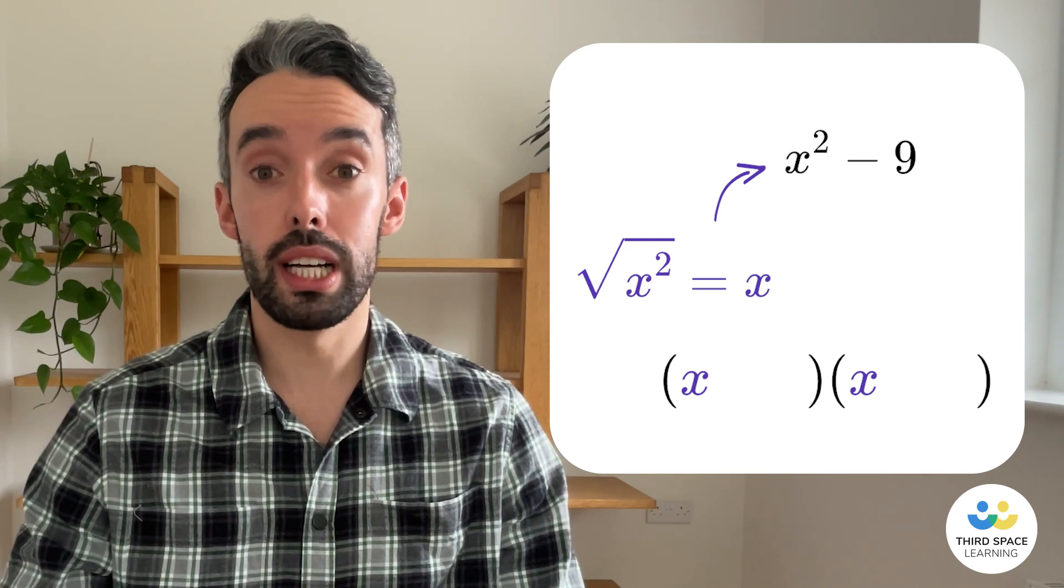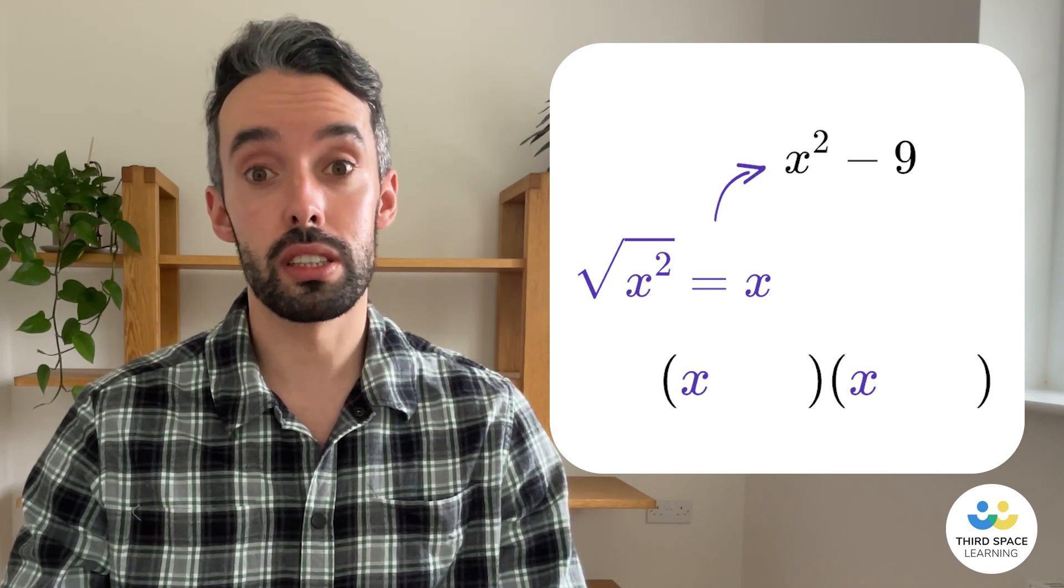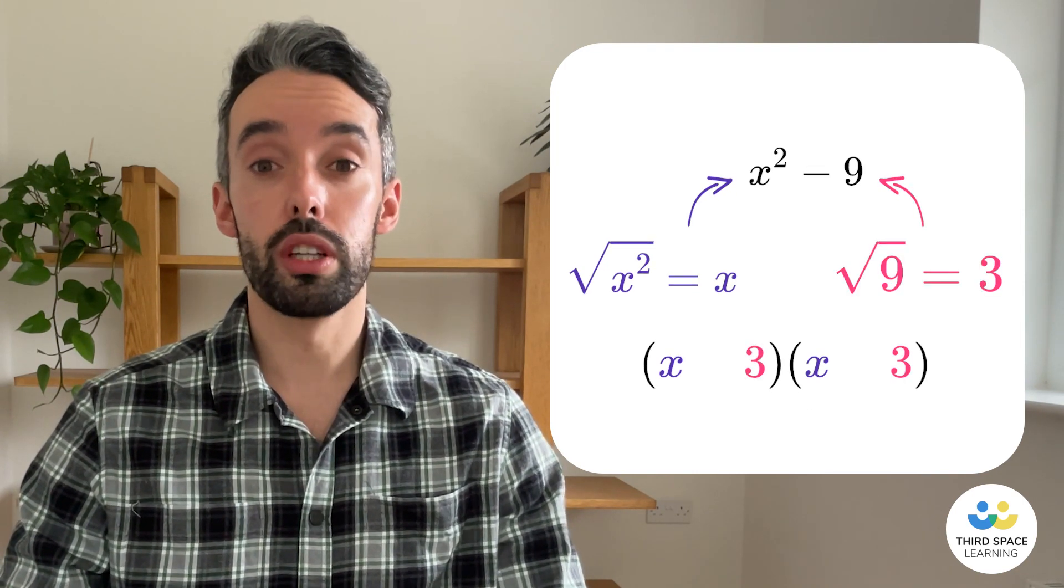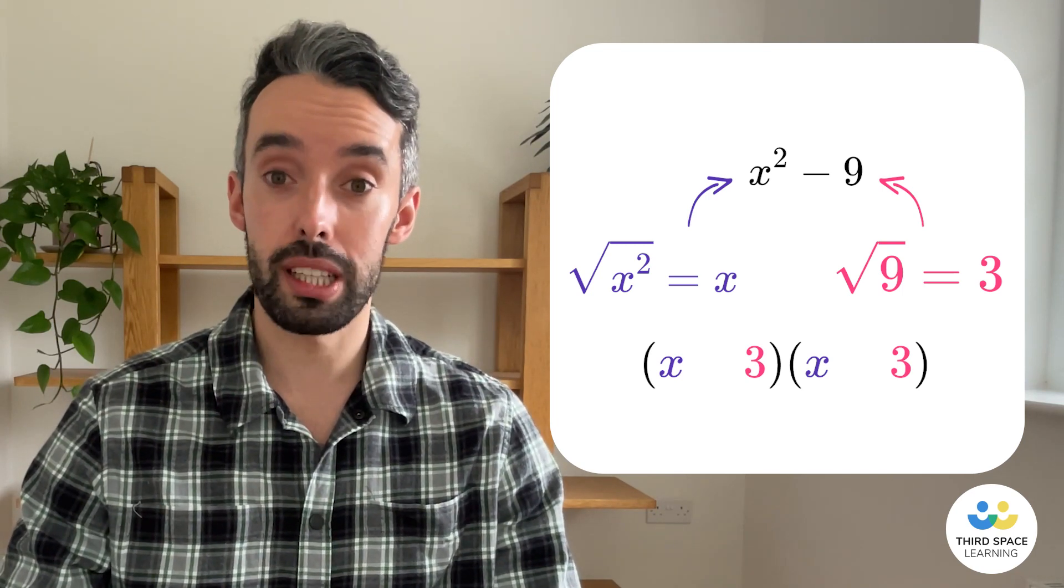So the square root of x squared is x, so that goes at the start of both brackets. The square root of nine is three, so that goes at the end of both brackets.